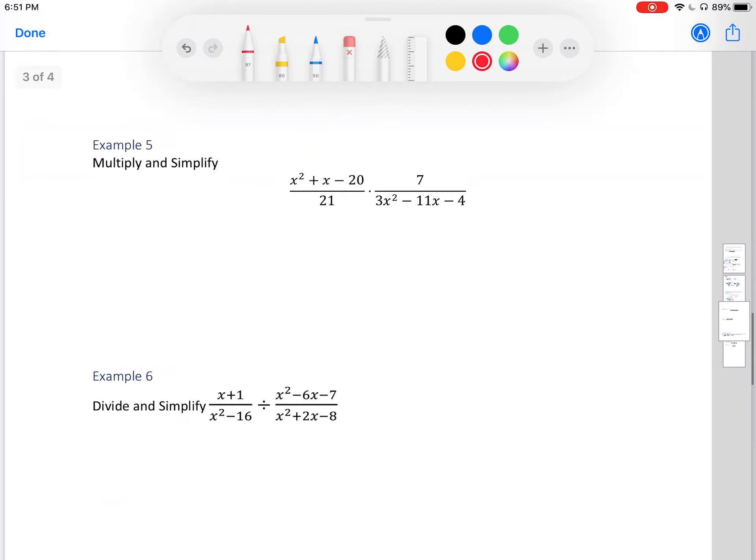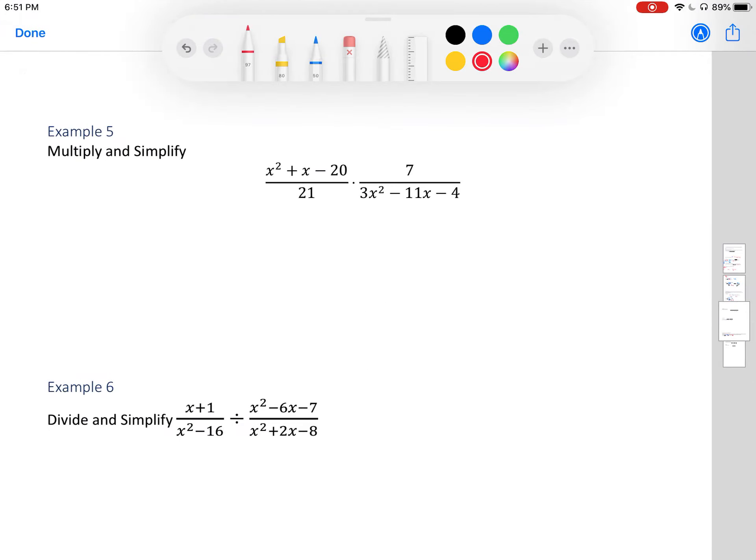Okay, let's continue with example 5. We want to multiply and simplify. Whoa, this problem looks so complicated. Let's start off by first factoring completely. In my numerator I have x plus 5 times x minus 4.